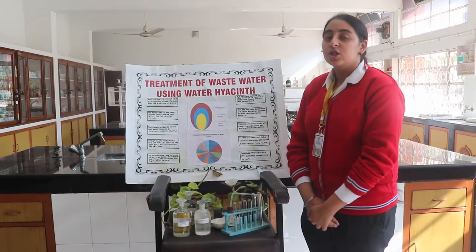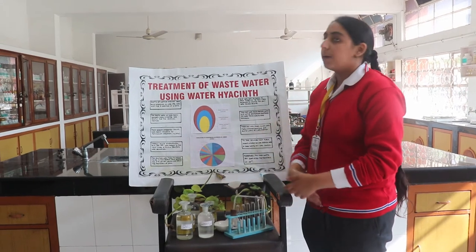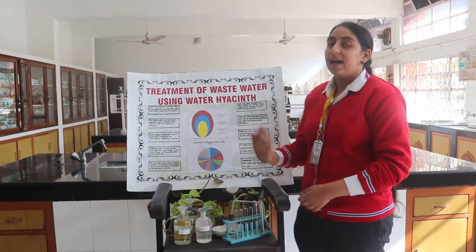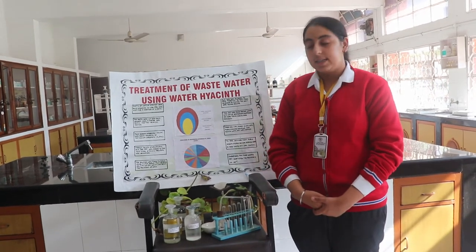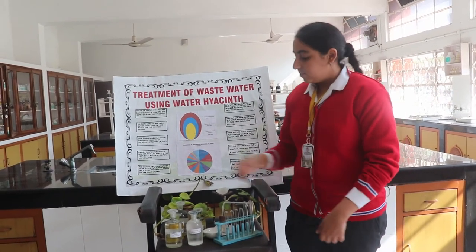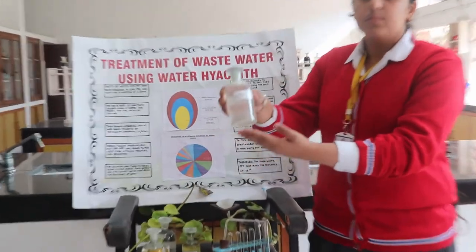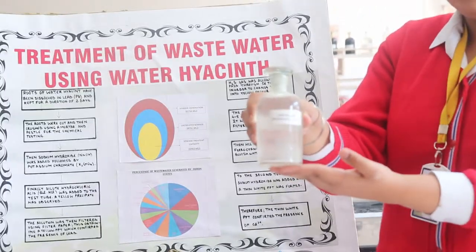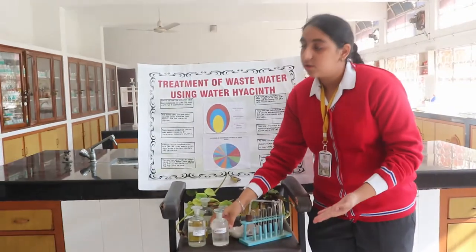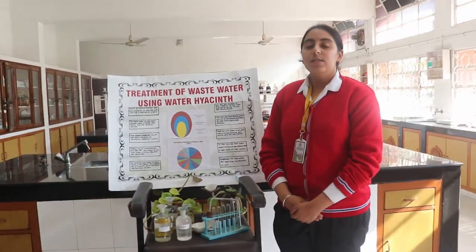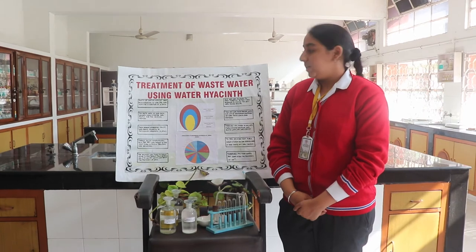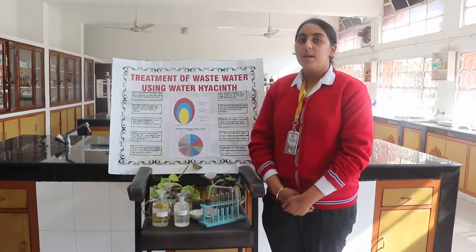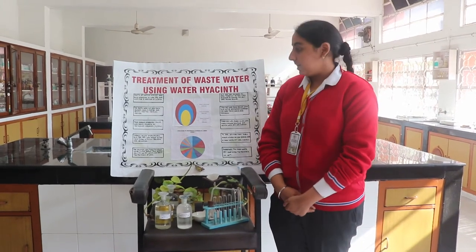Now I will be explaining the chart which contains the steps for the chemical testing that we did in order to check the presence of lead and cadmium in the roots of water hyacinth. First, we took some lead acetate and dissolved it with the roots of water hyacinth. These roots were kept for a duration of two days. Next, the roots were cut and crushed using a mortar and pestle to extract the juice for chemical testing.